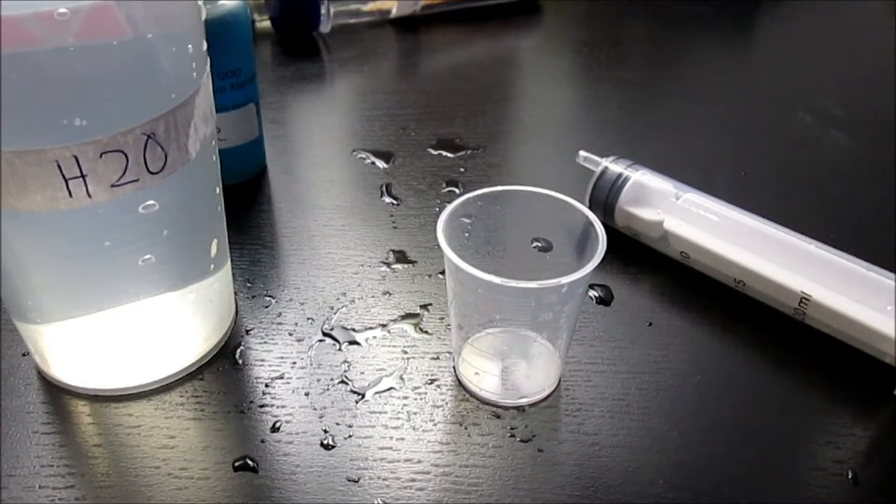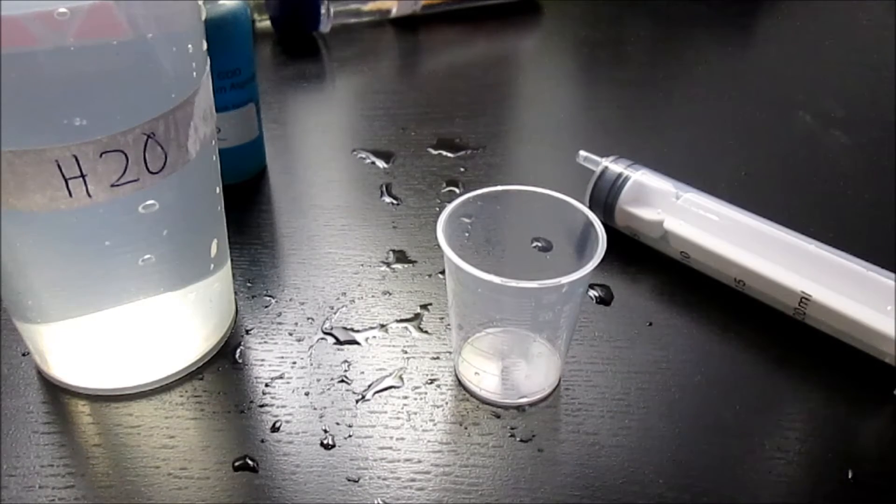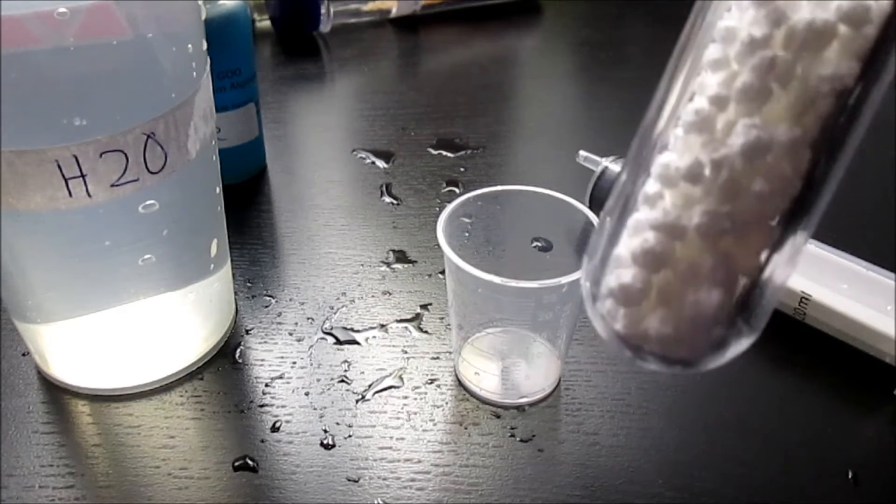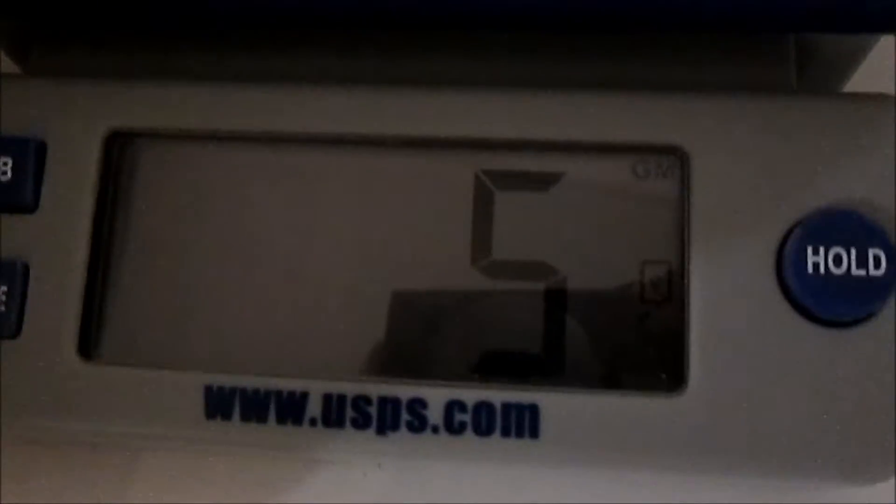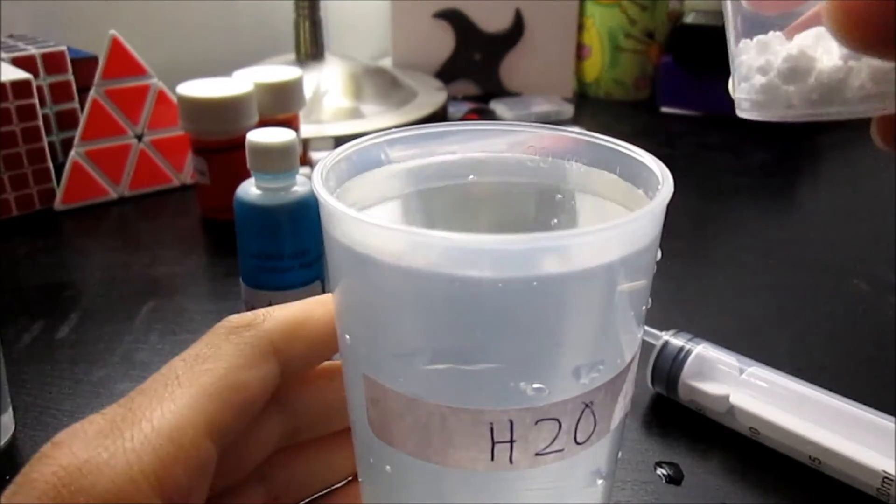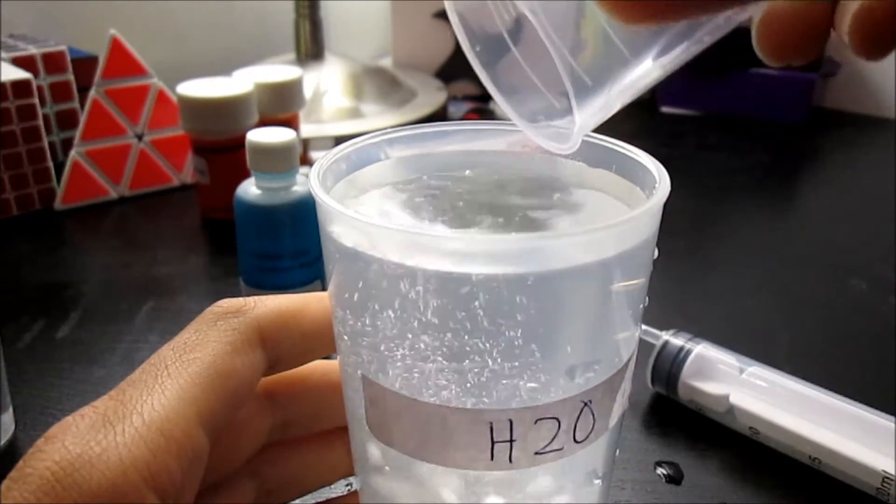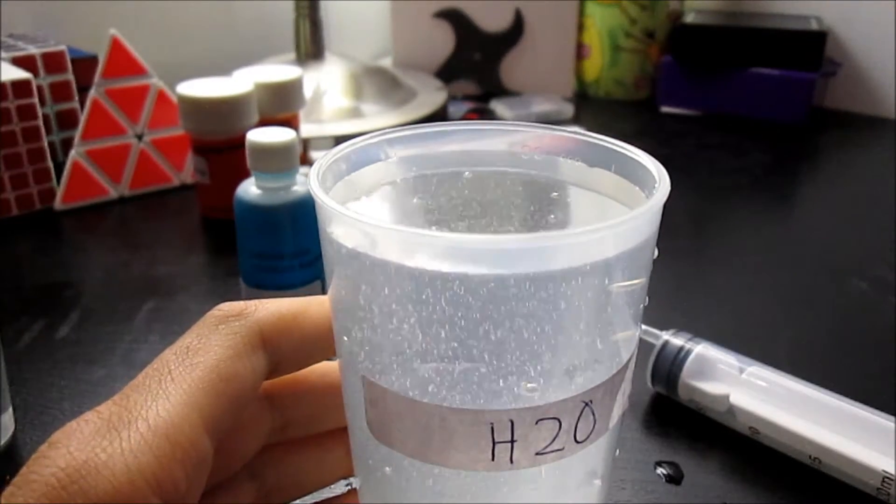To make this a 5% calcium chloride solution, I'll need to add 5 grams of calcium chloride. Now I'll add the calcium chloride to the water and stir it.